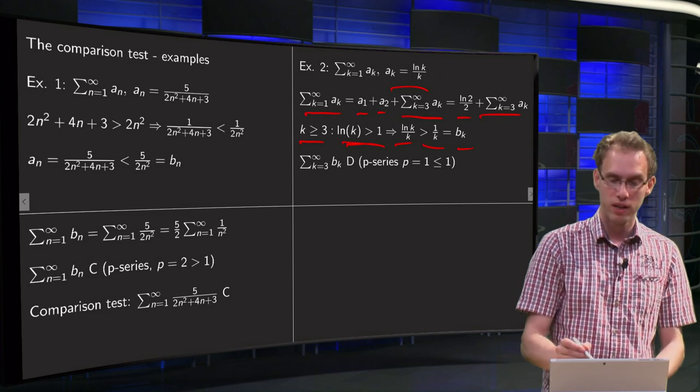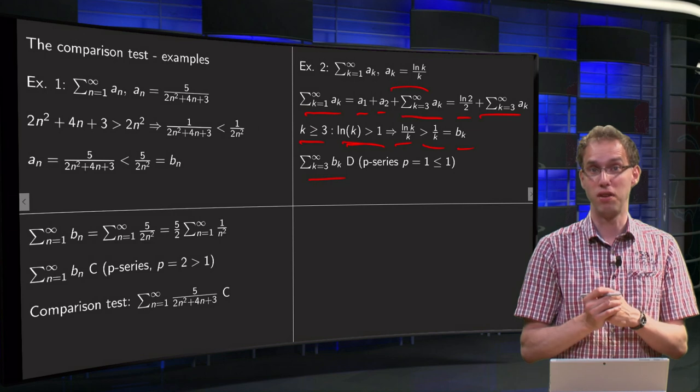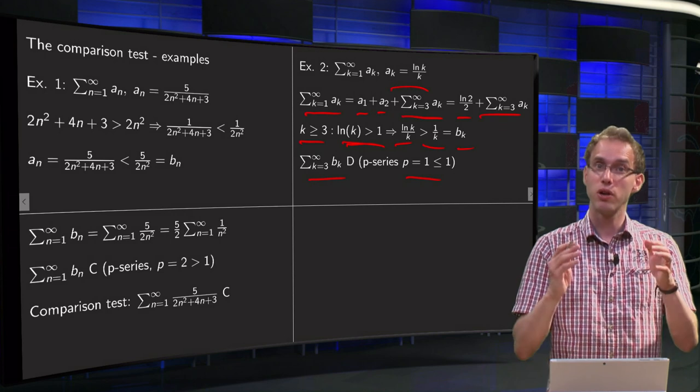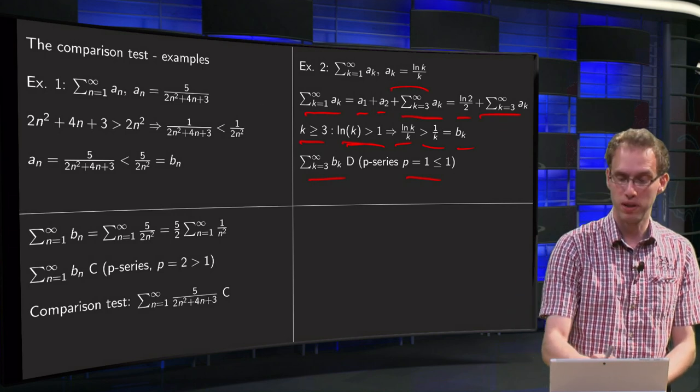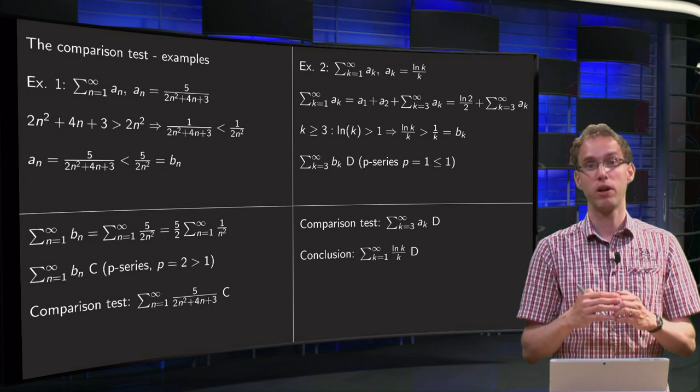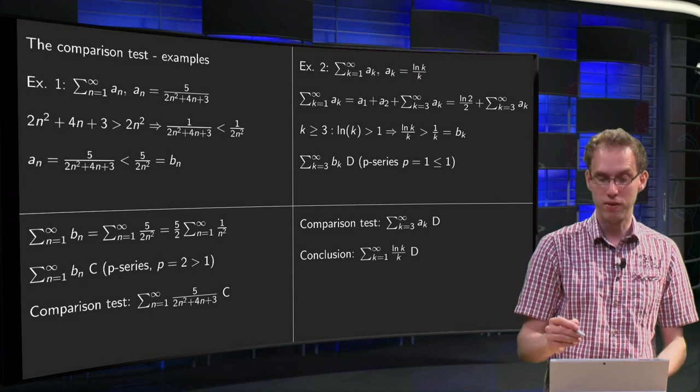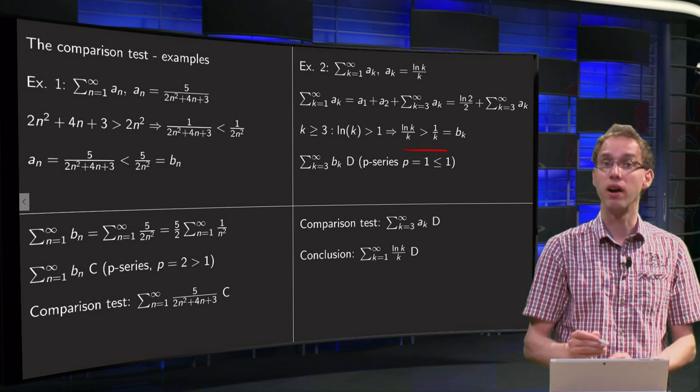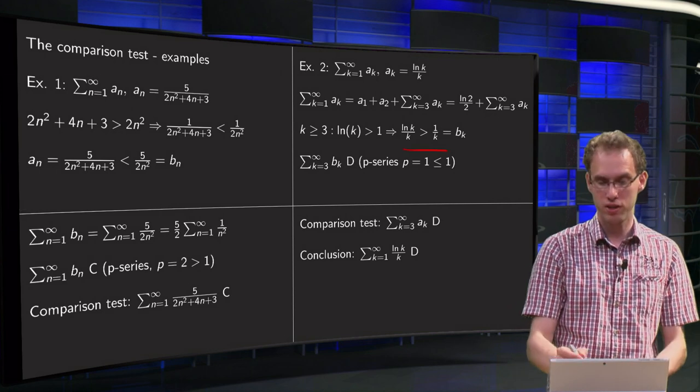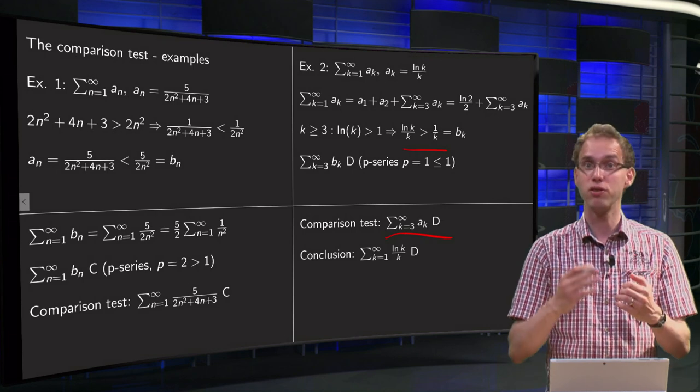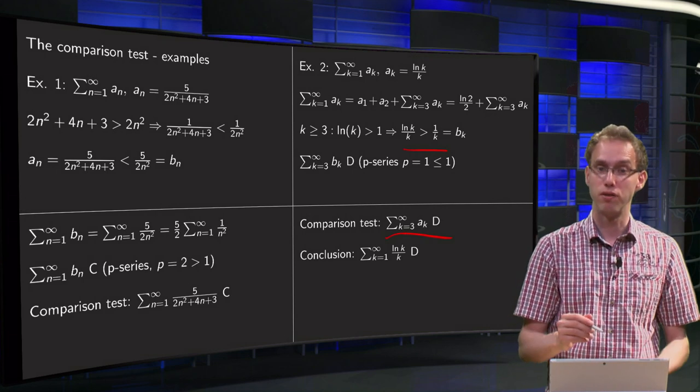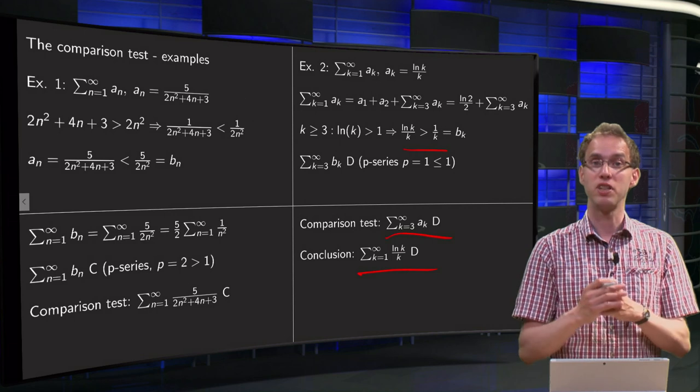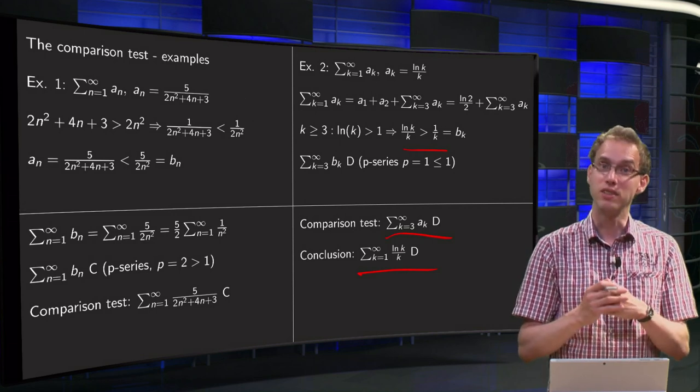Now I know that the sum k from 3 to infinity of the bk is divergent. It's the harmonic series, or a p-series with p equals 1, which is less than or equal to 1. So we can use our comparison test. Our ak are even bigger than our bk. So the sum of the ak is even bigger than a divergent series, so the sum starting at 3 to infinity is divergent. So if I add a few terms, that series is of course divergent as well. So my series ln k over k from 1 to infinity is a divergent series.